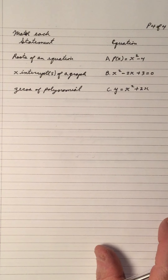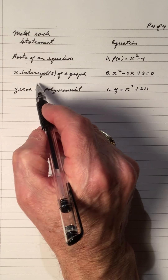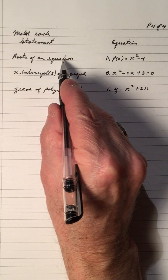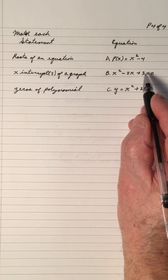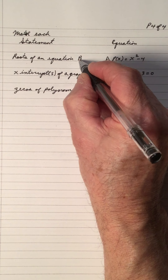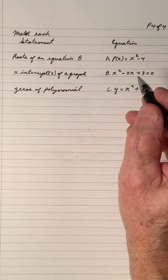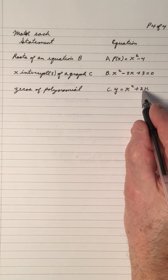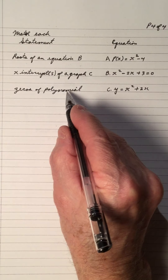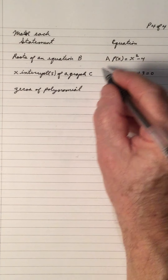The zeros of a polynomial are the same as the X intercepts of a graph, and the same as the roots of an equation. Match each: roots of an equation — the equation is equal to zero, so that's B. The X intercepts of a graph need X and Y, so that's C. The zeros of a polynomial require P of X, so that's A.